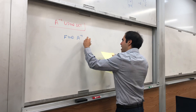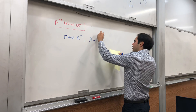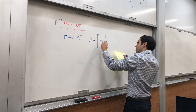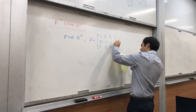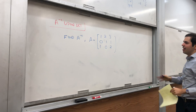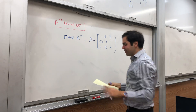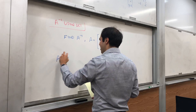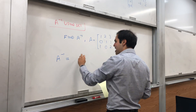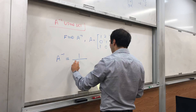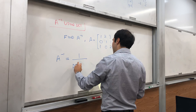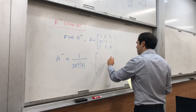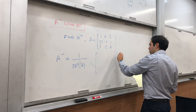Where A is the matrix [1, 2, 3; 0, 1, 1; 1, 0, 2]. So how do you do this? It's a bit strange. The formula is as follows: A inverse is 1 over the determinant of A, times a 3×3 matrix transpose.